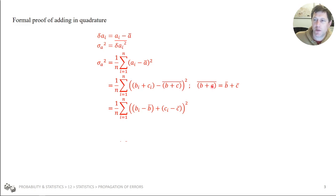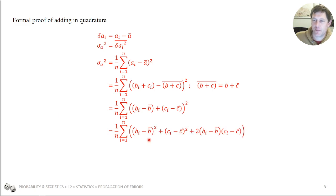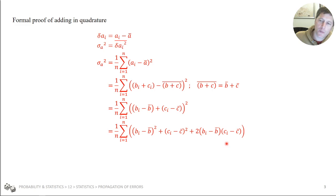We can rearrange the summation term into B_i minus mean-B plus C_i minus mean-C. That turns into our delta B_i and delta C_i terms. Expanding that: B_i minus mean-B squared, plus C_i minus mean-C squared — that's the sort of thing we're looking for. But then we have this additional term: 2 times (B_i minus mean-B) multiplied by (C_i minus mean-C). That doesn't fit with what we're looking for. These are what we want — that's the quadrature result we've been looking at.